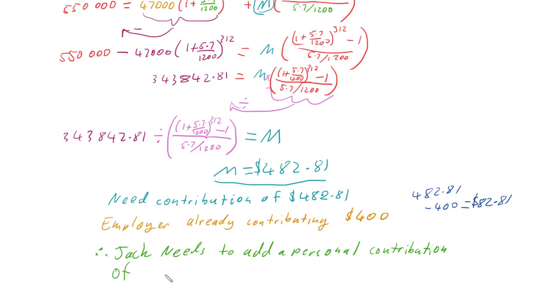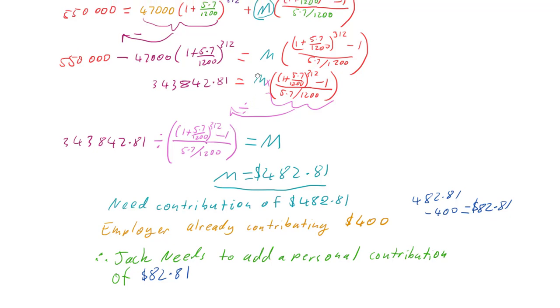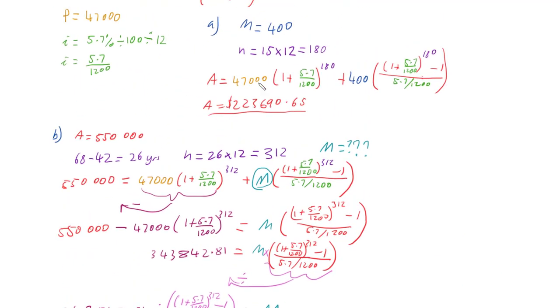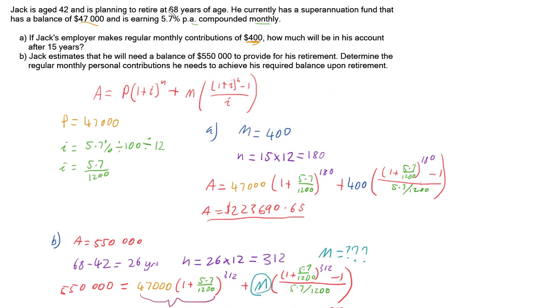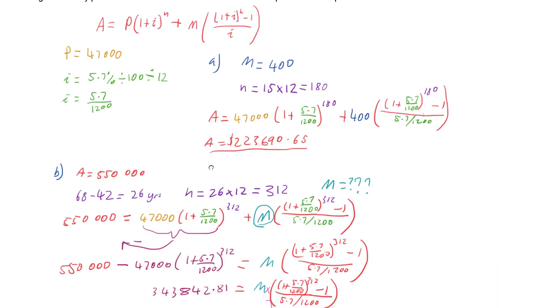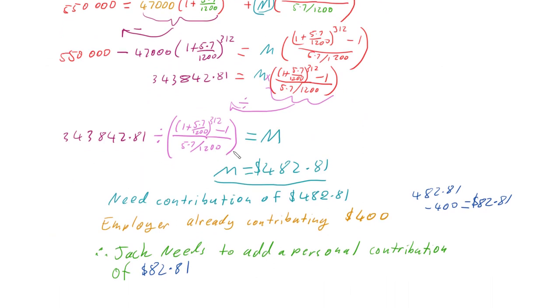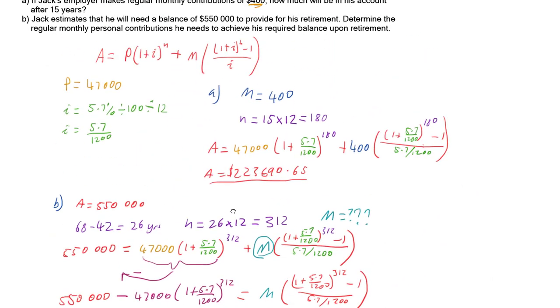Therefore, $482.81 minus $400 equals $82.81. So he needs to add in himself at least $82.81 each month out of his own money to make sure that in 26 years time, when he retires at age 68, he has his $550,000 that he believes he needs to comfortably retire on.